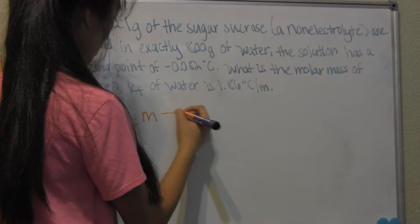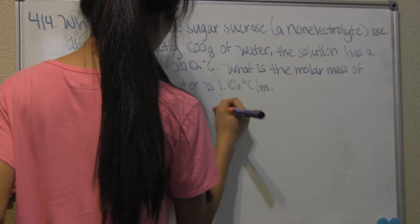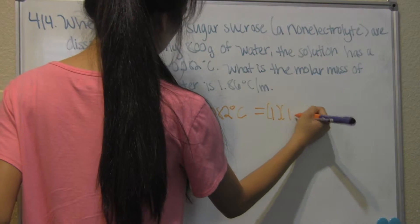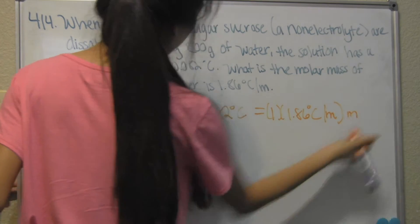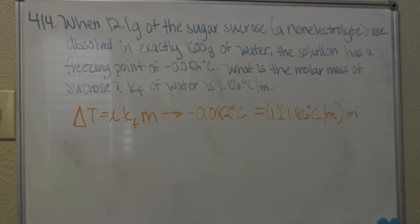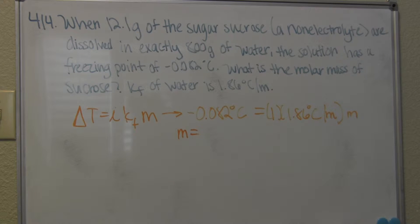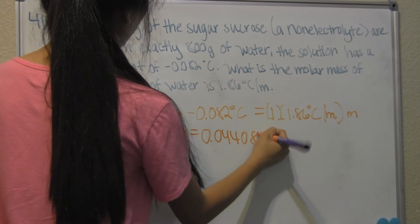So this will turn out to be negative 0.082 degrees Celsius is equal to 1 times the 1.86 degrees Celsius molality. Since we're looking for M, all we have to do is divide the negative 0.082 degrees Celsius by the 1.86 and you end up getting a molality that is equal to 0.044086.